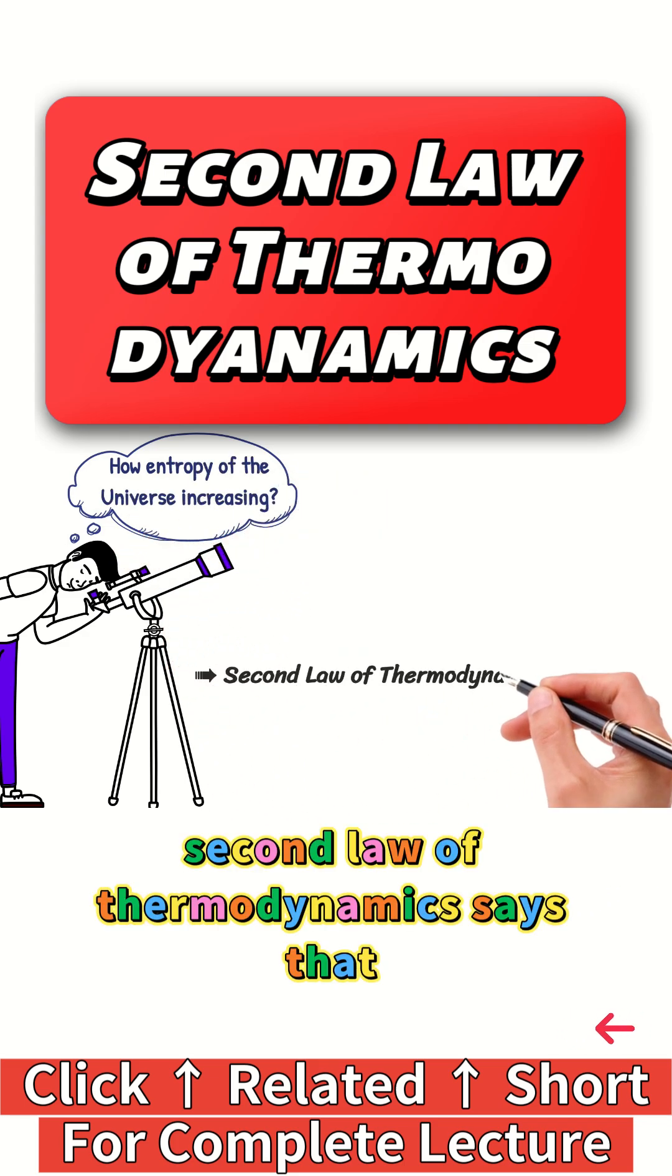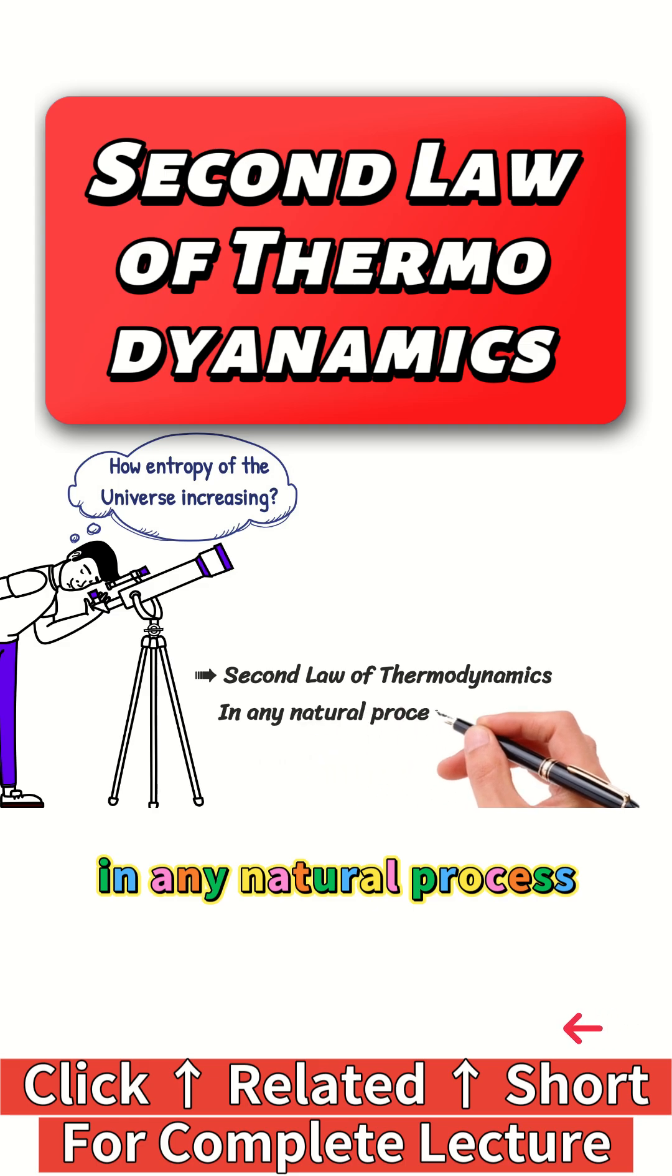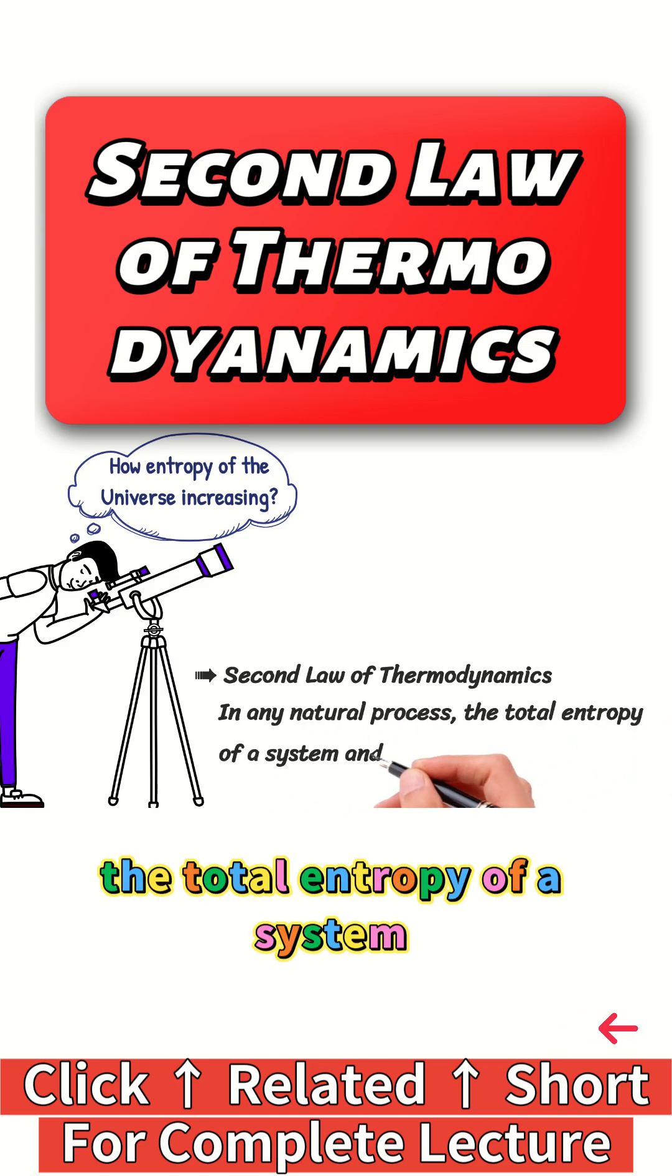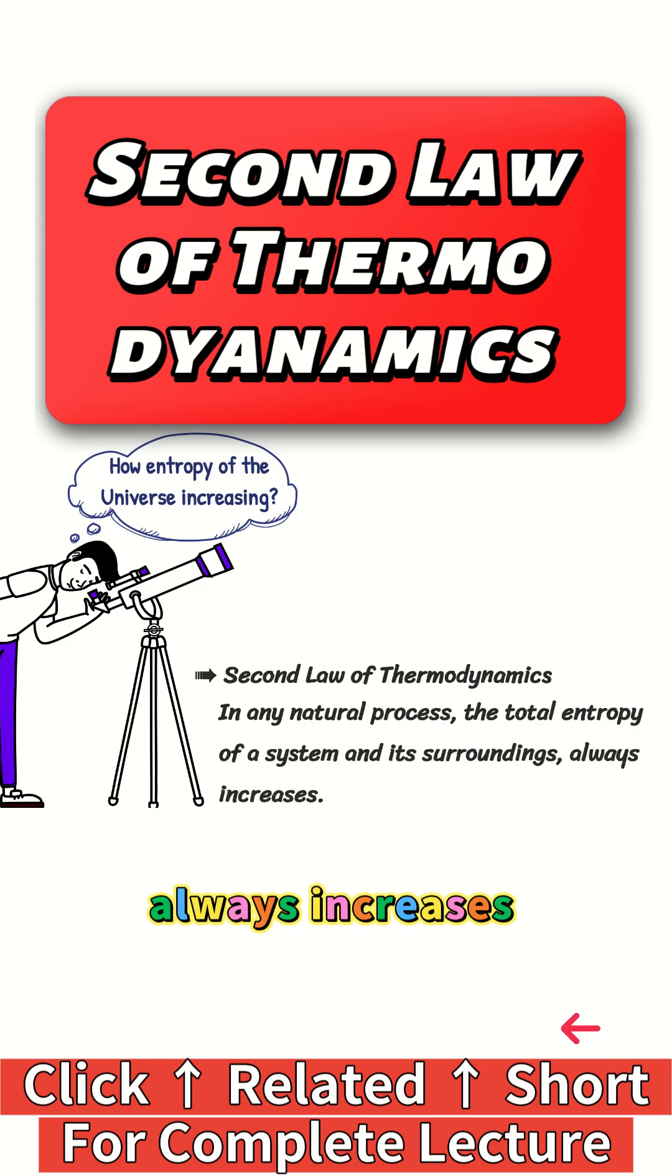Second law of thermodynamics says that in any natural process, the total entropy of a system and its surroundings always increases.